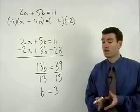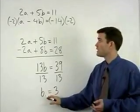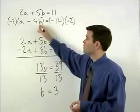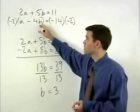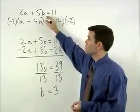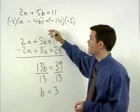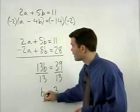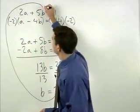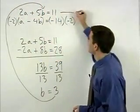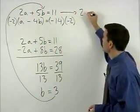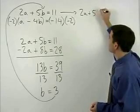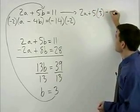To solve for a, plug a 3 in for b in either one of our two original equations. So let's go with our first equation, 2a plus 5b equals 11. If we plug a 3 back in for b, that gives us 2a plus 5 times 3 equals 11.